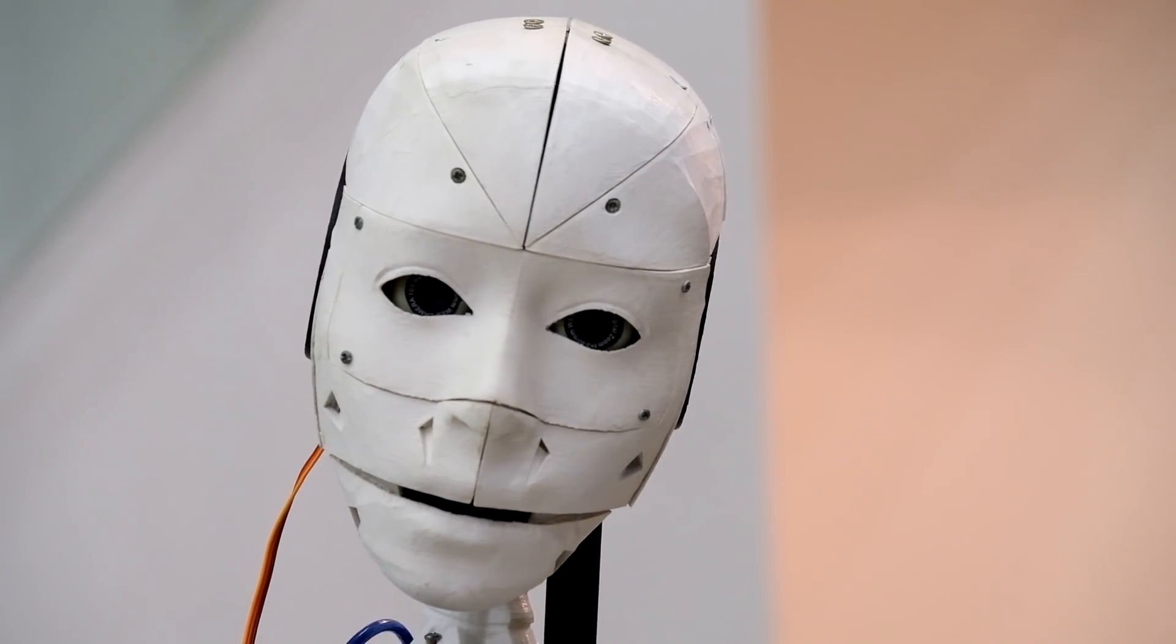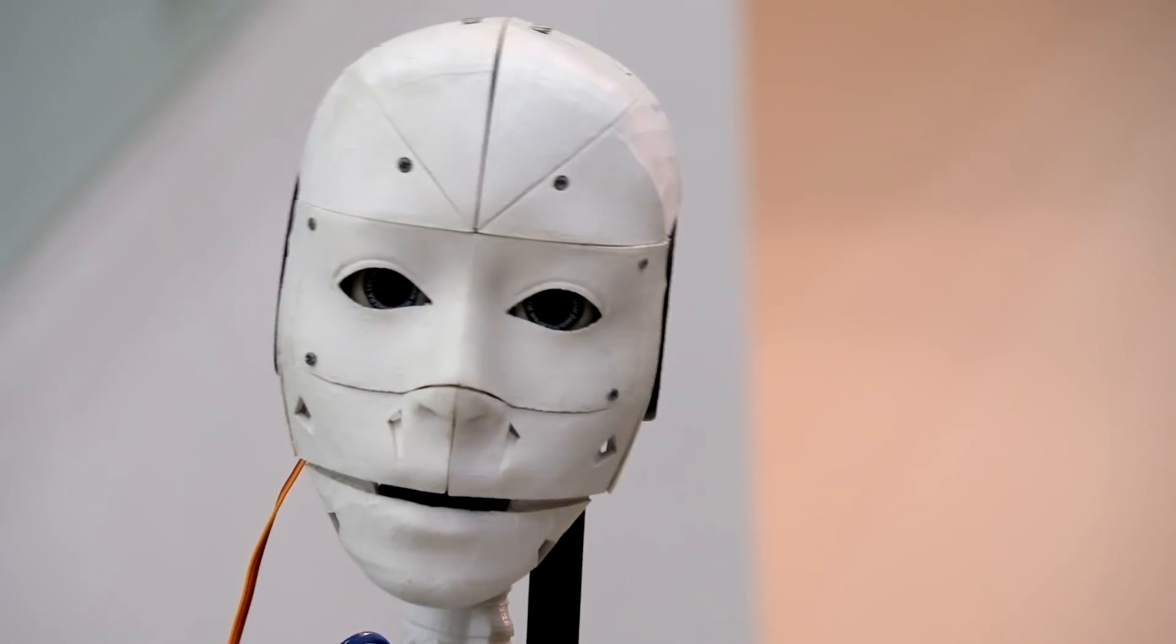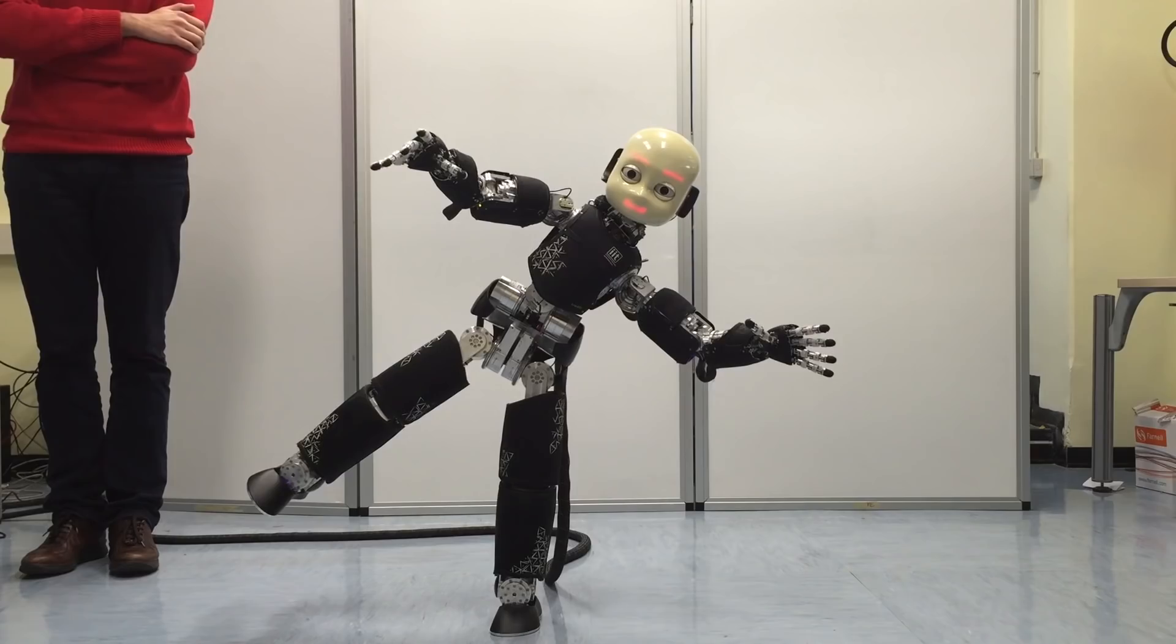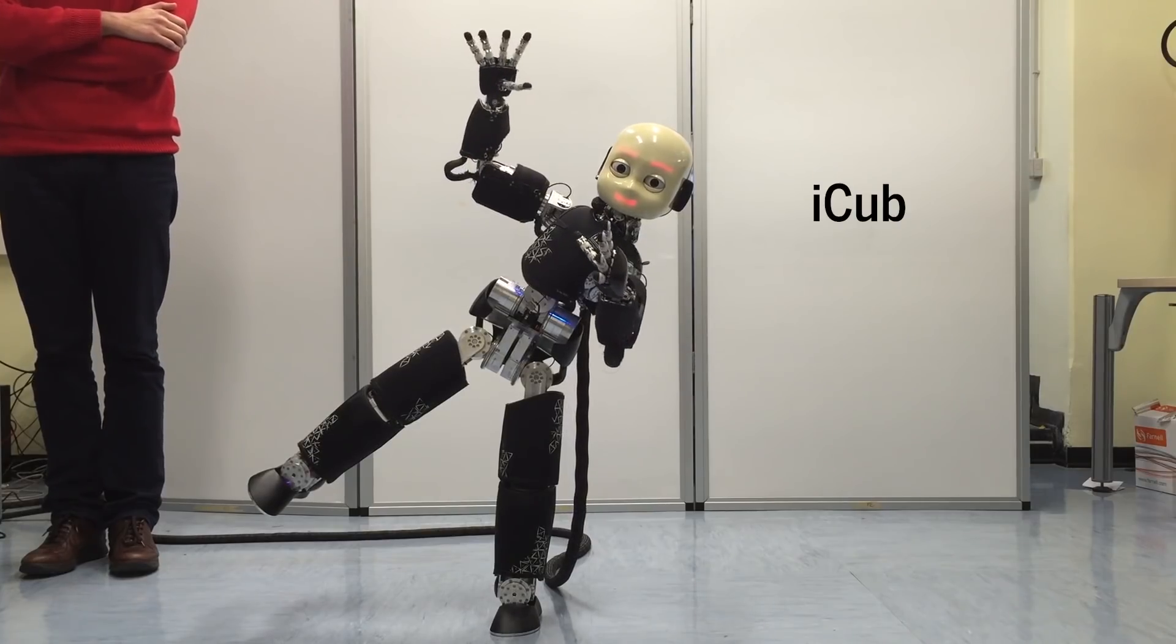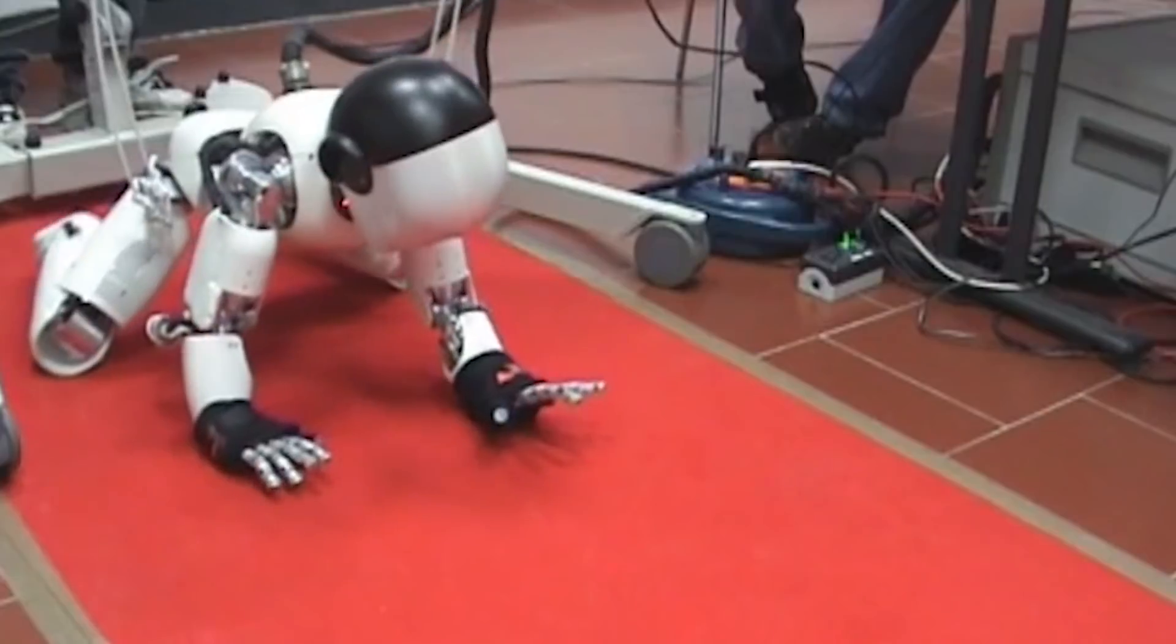That hasn't stopped scientists from tackling the daunting task to make robots look and act more human. In 2004, European researchers began work on the iCub, a robot designed to mimic a child.